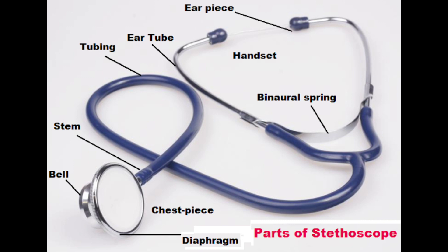Stethoscopes are a vital medical instrument for listening to the sounds produced within the body, mainly in the heart, lungs, and abdomen. The stethoscope is used for auscultation, or listening to the internal sounds of the body, including sounds made by the heart, lungs, intestines, and blood flow in the arteries and veins. It is also used with a manual sphygmomanometer to measure blood pressure.